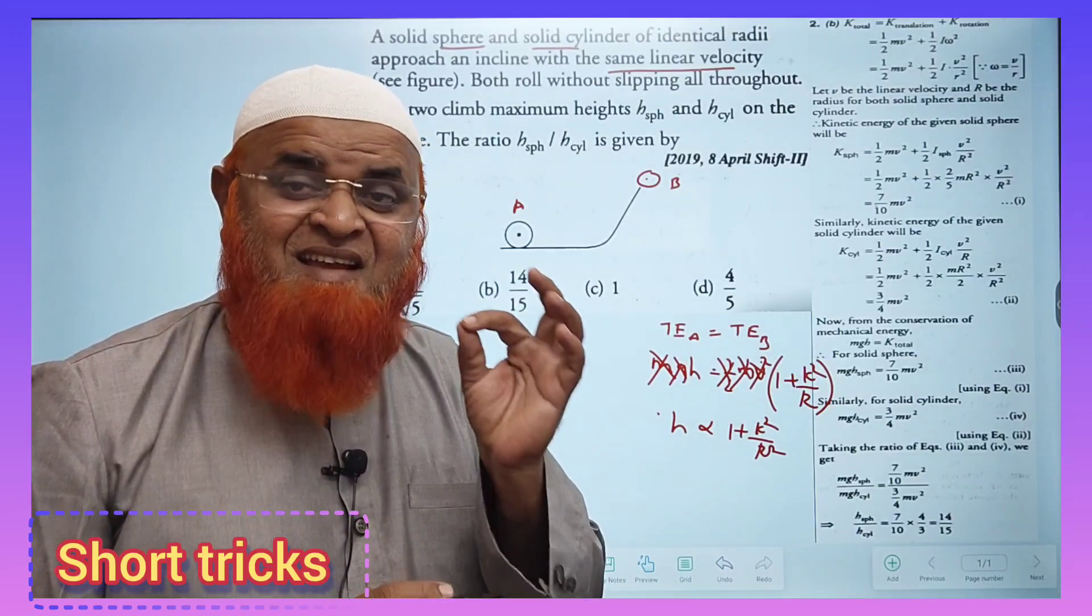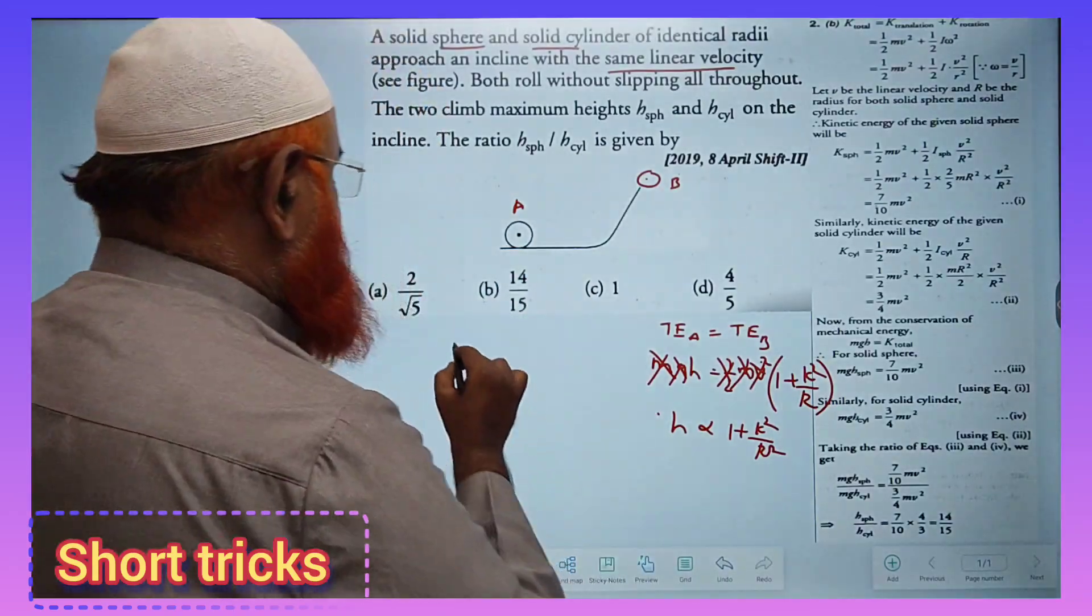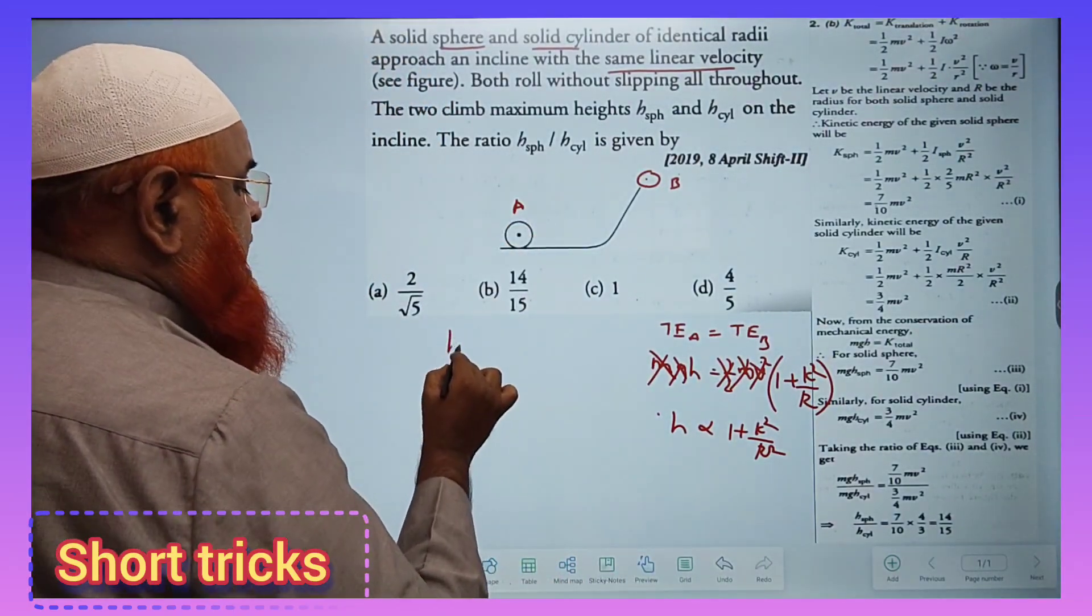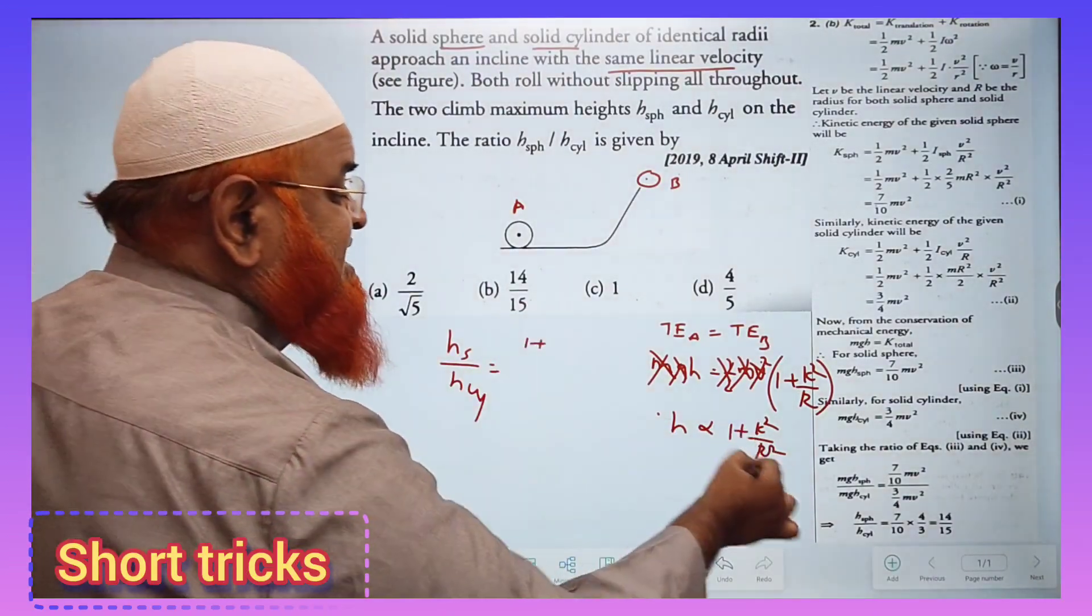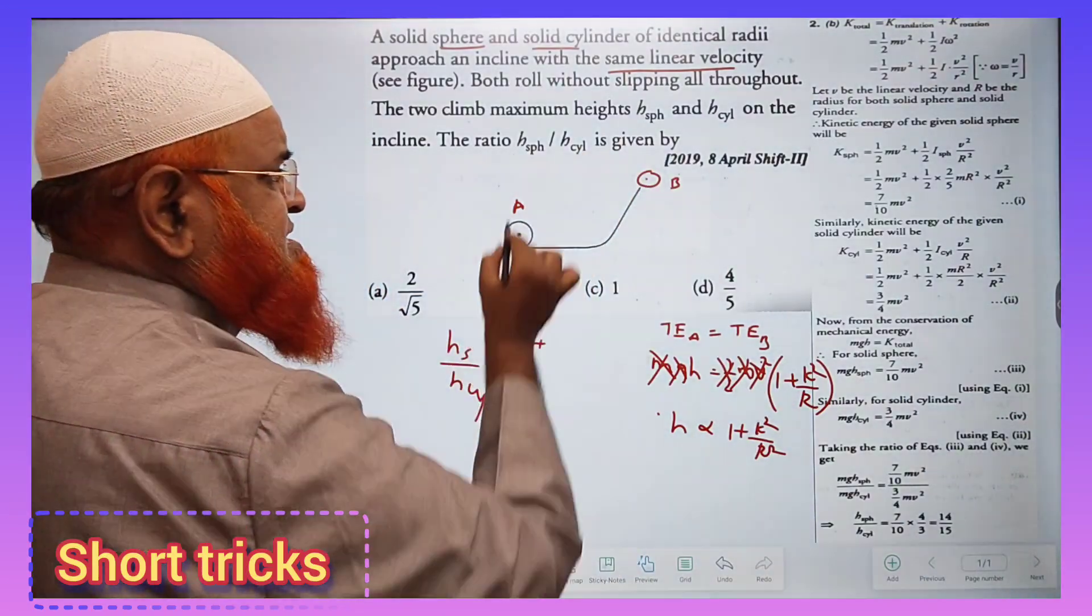The height of a sphere by height of a cylinder equals (1 + K²/R² for sphere) divided by (1 + K²/R² for cylinder).